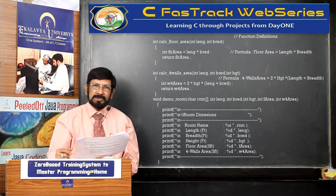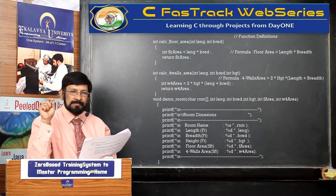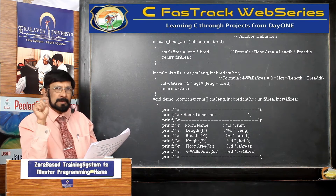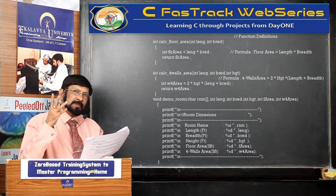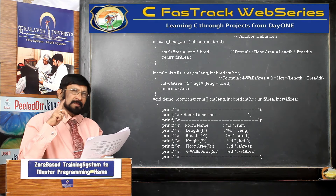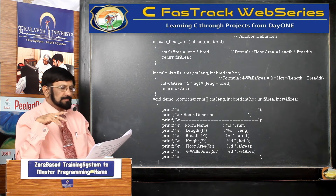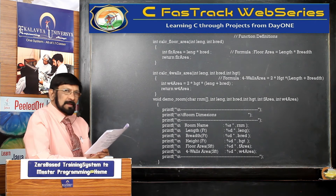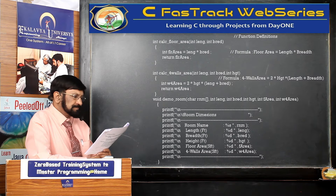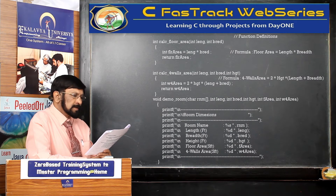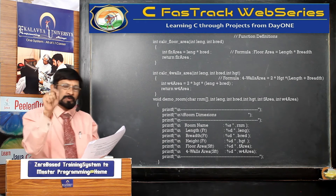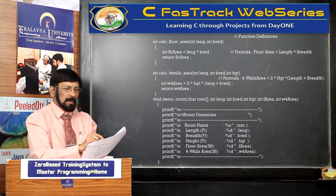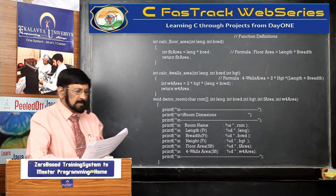So, the second function is for wall area. What is the formula? 2 * H * (L + D) — 2 into height into (length + breadth) within parenthesis, you have to write. Which values do you have to pass? Three values: length, breadth and height — those are the parameters. Within the body of the function, you write int for_area as the local variable, which is 2 into height into (length + breadth). You must use the same parameter names within the body of the function. That value we are returning.